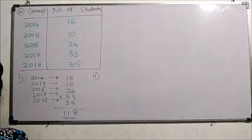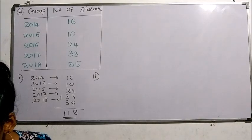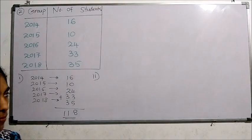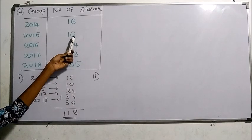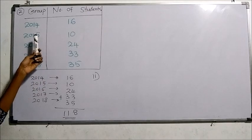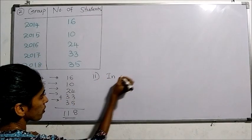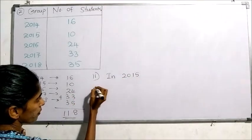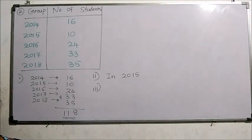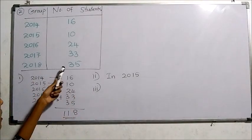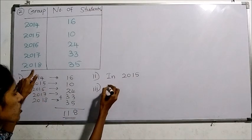In question 2, in which year did the least number of students pass the exam? The least number — the minimum number — of students passed in the year 2015, with 15 students. Next, question 3: in which year did the most number of students pass the exam? The maximum number is 35, so that particular year is 2018.